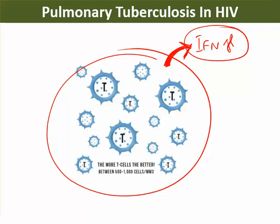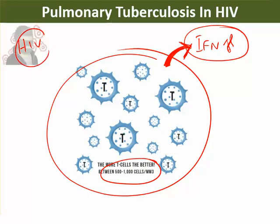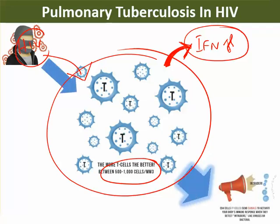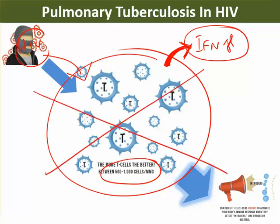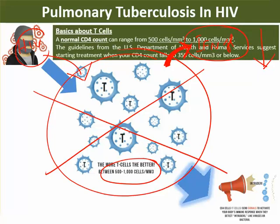The normal CD4 T cell count is around 500 to 1000 cells per cubic millimeter. In HIV infection, the virus infects and destroys CD4 T cells. When this happens, interferon gamma is reduced, so mycobacterium cannot be killed and easily spreads all over the body. This is what happens in pulmonary tuberculosis in HIV patients.